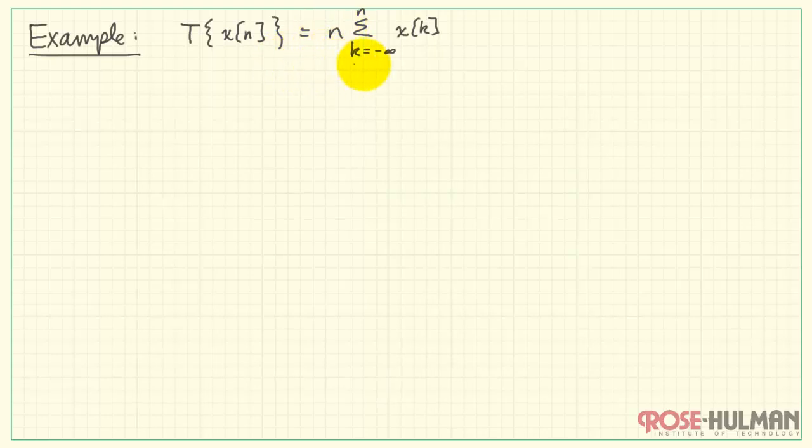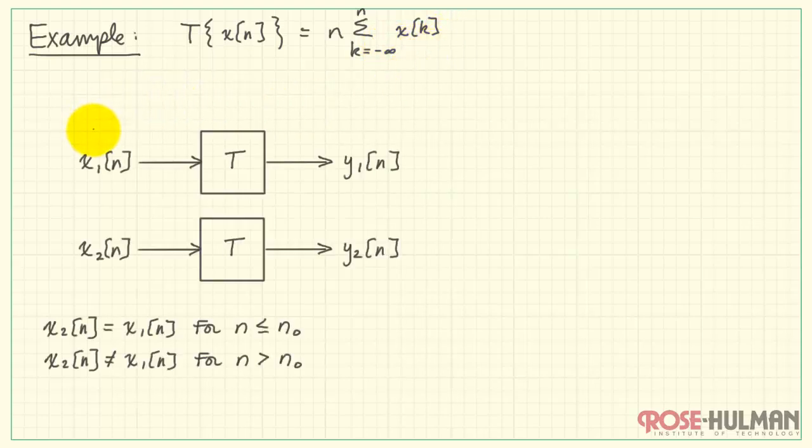Let's take a look at our first example. I have n multiplying the sum of values of X summed from K equals minus infinity to the time step n.